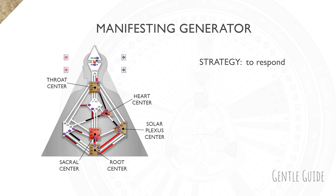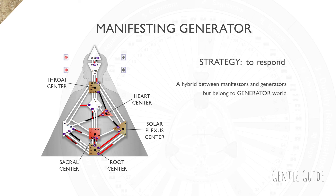Let's now check Manifesting Generators. This is an example of the chart for a Manifesting Generator. The reason why I included Manifesting Generators after Generators is because they're a hybrid between Manifestors and Generators, but still fall into the Generator world because of their defined sacral center.